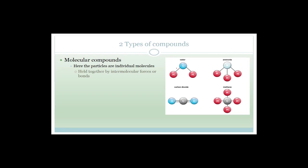Going back to molecular compounds: water, ammonia, and methane are held together by what is called hydrogen bonding. Hydrogen bonding is actually a misnomer — it's something that has been incorrectly named. A misnomer is something incorrectly named: 'monomer' means to name something, 'misnomer' means something incorrectly named. So hydrogen bonding is actually an intermolecular force — it is something very weak that happens between the molecules.